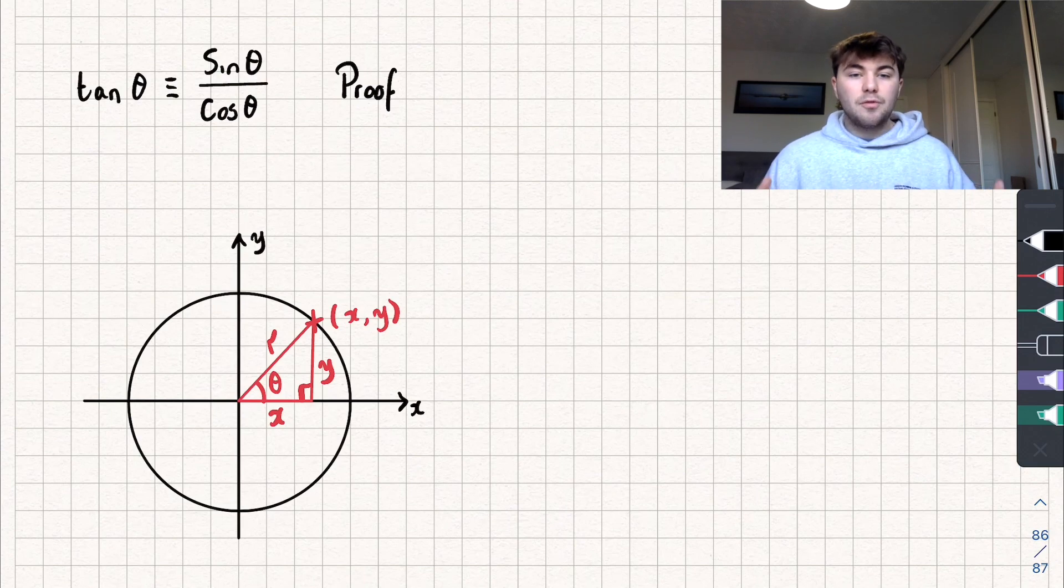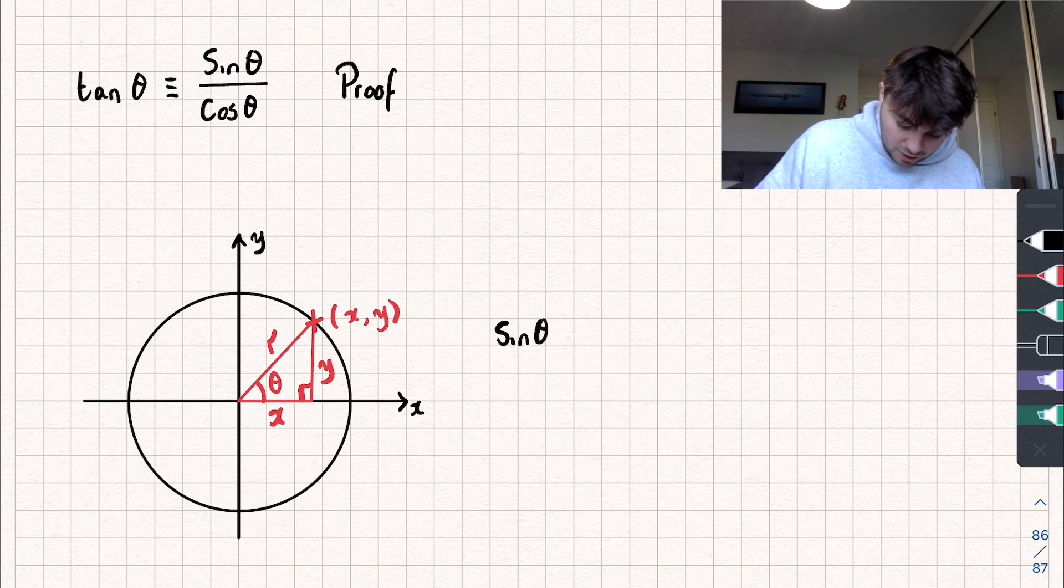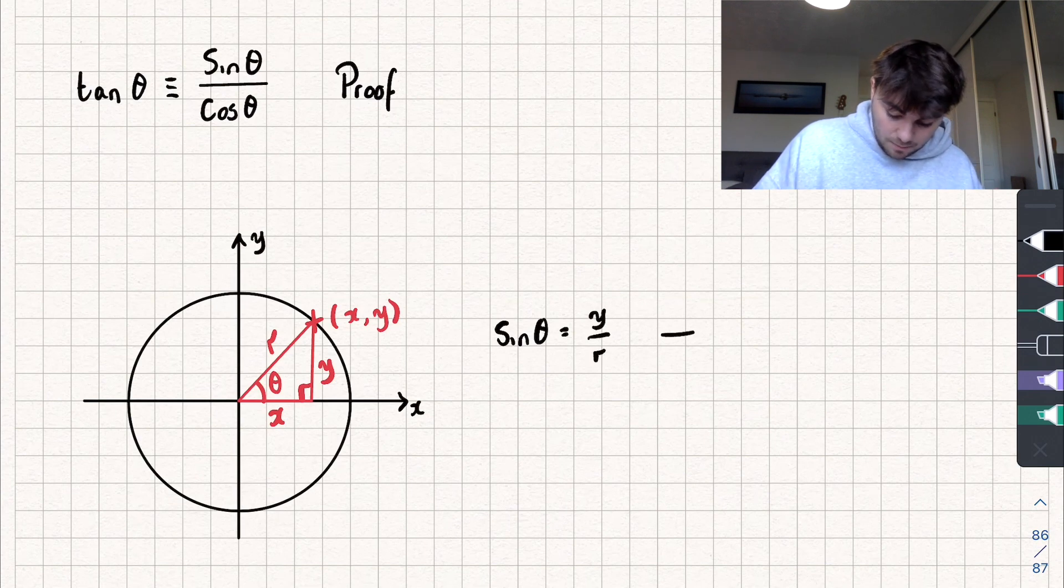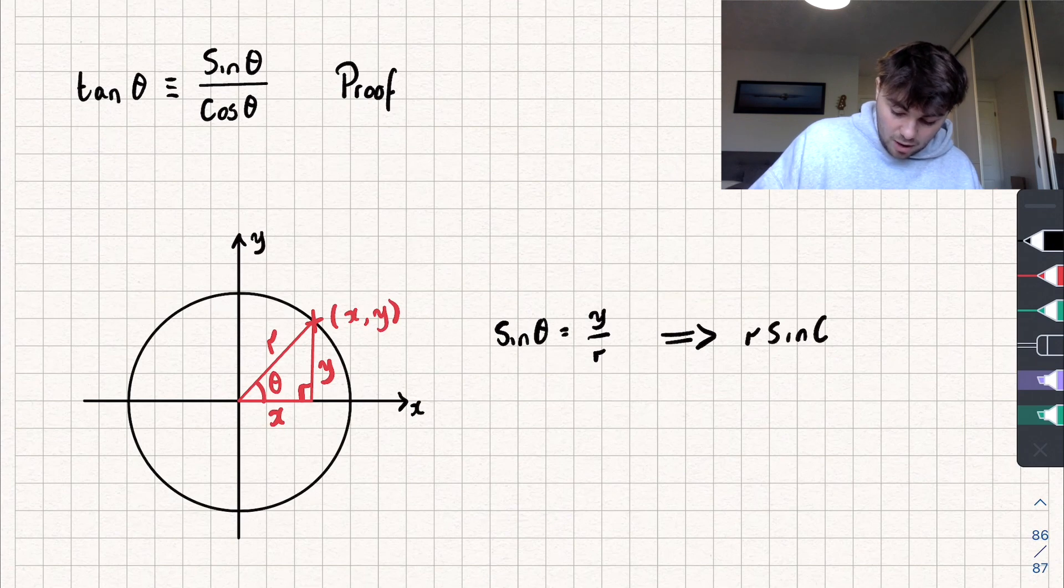So from here let's write down some information we know about this diagram. So I could say that well sine of the angle, so sine of theta, well that's going to be equal to the opposite side divided by the hypotenuse. The opposite side is y and the hypotenuse is r. And so multiplying both sides by r, that means that well r sine of theta is going to be equal to y.